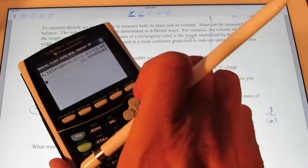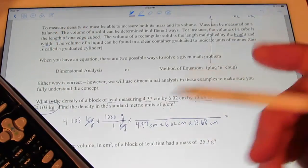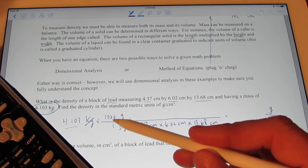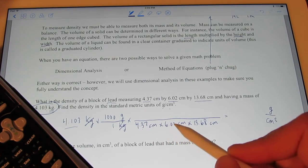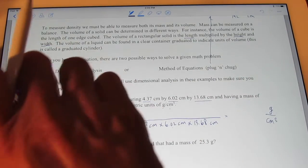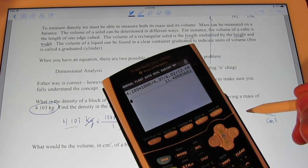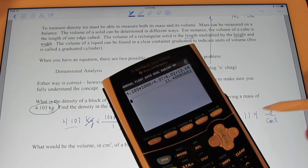And I get 11.40085682. Looks like I am allowed how many sig figs? Let's take a look. There are 4 sig figs here. That's a definition, so there's infinite sig figs. 3, 3, and 4. So, I can have 3 sig figs in my answer. So, rounding this off to 3 significant figures, I'm going to get 11.4 grams per cubic centimeter.